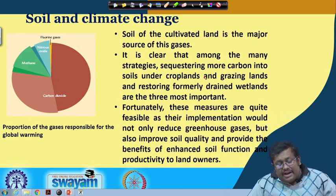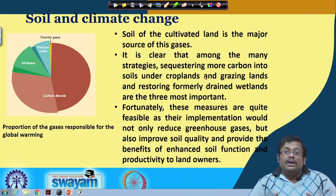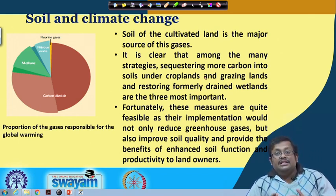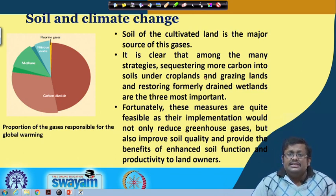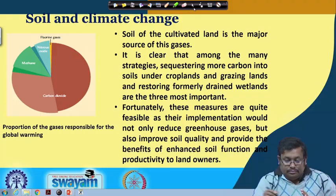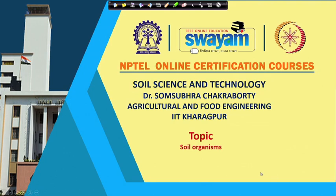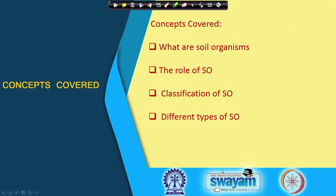These measures are quite feasible as their implementation would not only reduce greenhouse gases but also improve soil quality and provide benefits of enhanced soil function and productivity to landowners. That is why soil carbon sequestration is very important nowadays. We have finished the soil organic carbon lecture and will now start soil organisms, covering the different types, their roles, classification, and major groups.